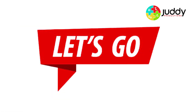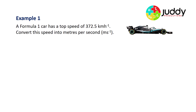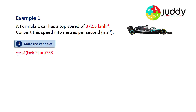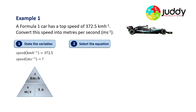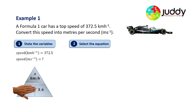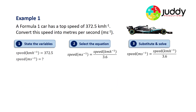Example one: a Formula One car has a top speed of 372.5 kilometres per hour. We want to convert this to metres per second. State the variables: speed in km/h is 372.5. Select the equation: speed in m/s equals speed in km/h divided by 3.6. Substituting and solving: 372.5 divided by 3.6 gives a final answer of 103.5 metres per second.